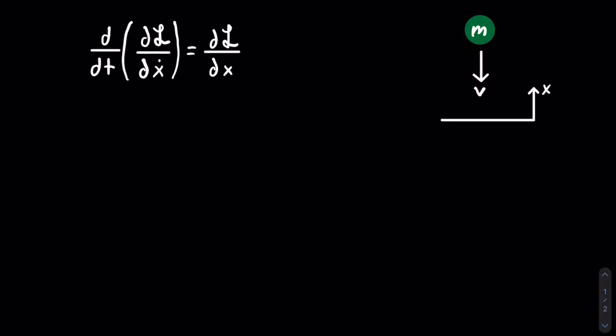So x is a position of the particle. This could even be an angle sometimes, as we will see in later examples. x dot is the first time derivative, meaning the velocity, or if it's angle, the angular velocity.